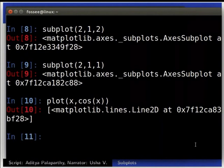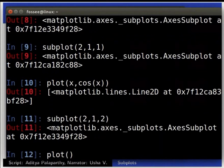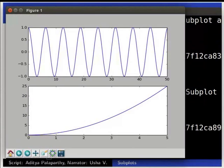Now, type, subplot, inside brackets, 2 comma 1 comma 2. This created two plots, one in each of the subplot area.